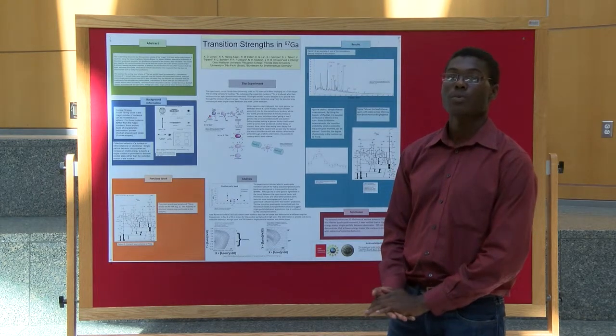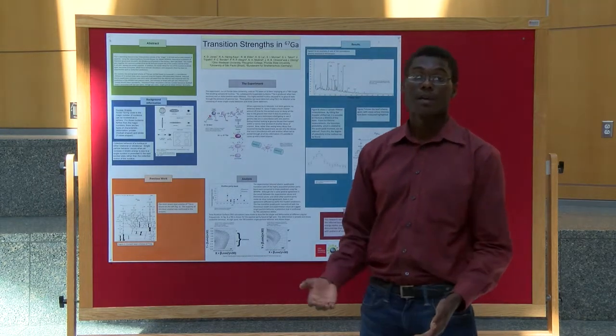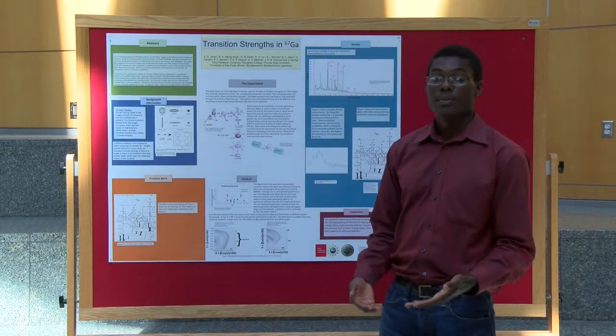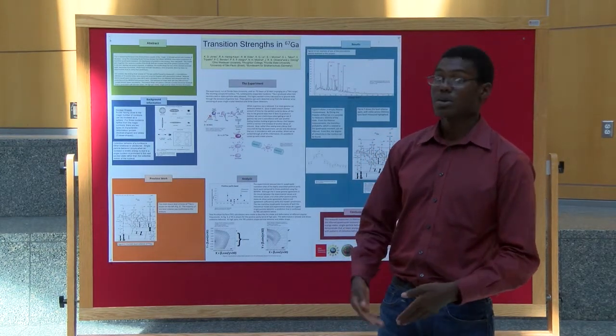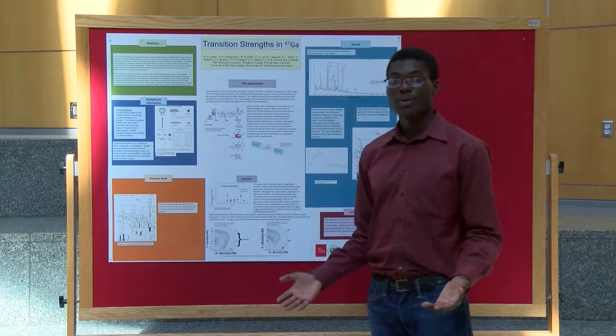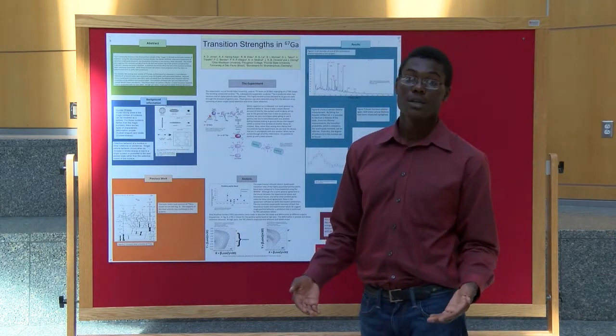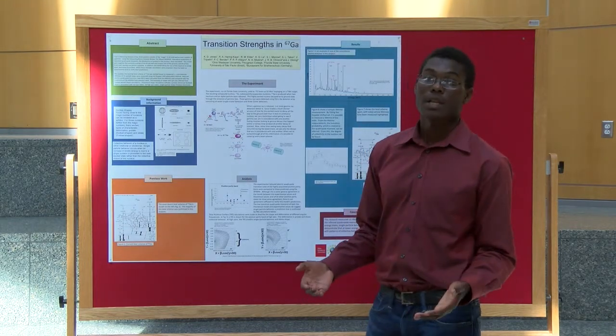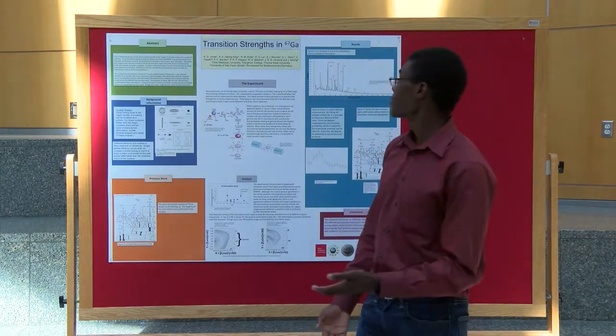What we did next was we started measuring lifetimes, because the inverse of a lifetime is a rate, and proportional to the transition rate is the quadrupole moment. The quadrupole moment is the degree of collectivity of protons in the nucleus, and that can tell us a lot about the nuclear structure of gallium 67.